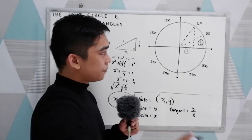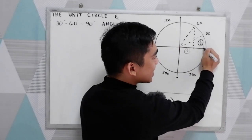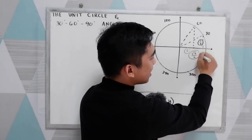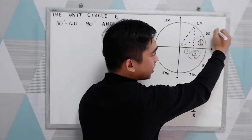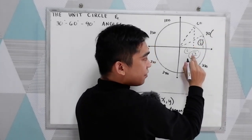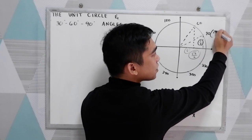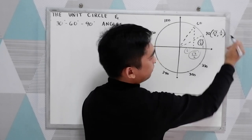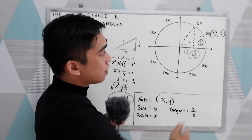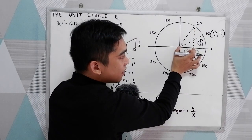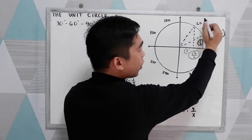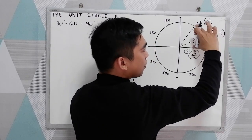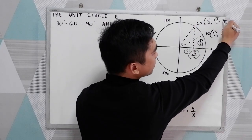That means the length of this side is square root of three over two. Now, to get the coordinate for 30 degrees, we have positive square root of three over two for x, and one half for y. And for 60 degrees, notice that our x has the shortest side, so that is one half, and y is square root of three over two.